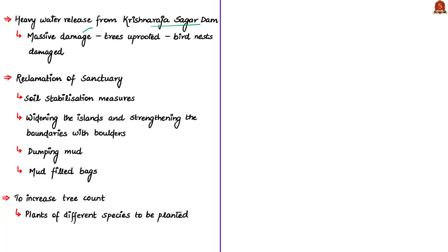As a result of heavy water release, several trees were uprooted and many bird nests were washed away. Trees are a vital part of bird habitat — if tree population decreases, bird diversity and population also decline. Steps being taken include increasing tree count, preventing soil erosion, soil stabilization measures, widening islands and strengthening their boundaries with boulders. The State Forest Department has also planned to dump mud to increase island thickness and place mud-filled bags as a protective layer for islands and islets.